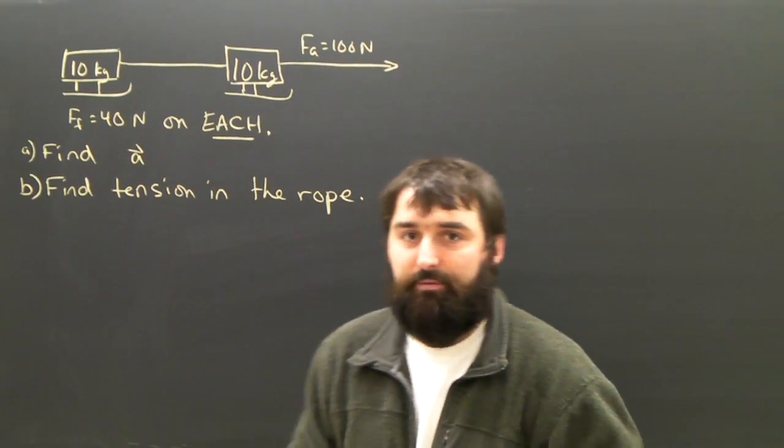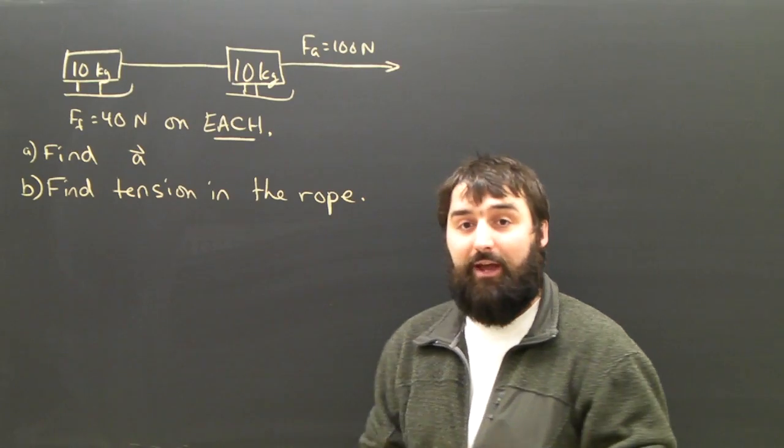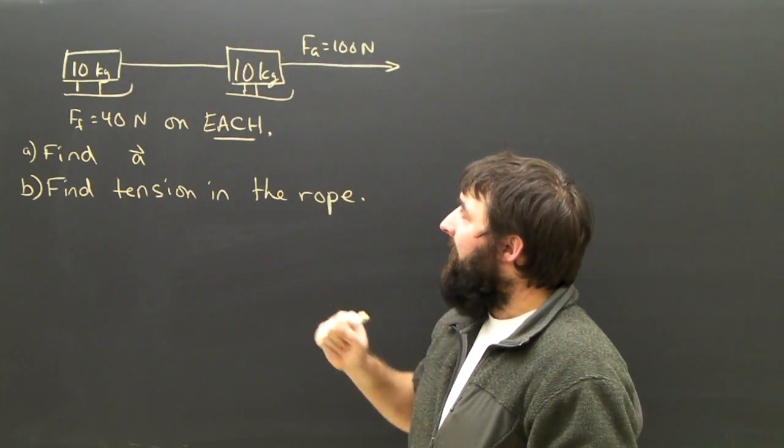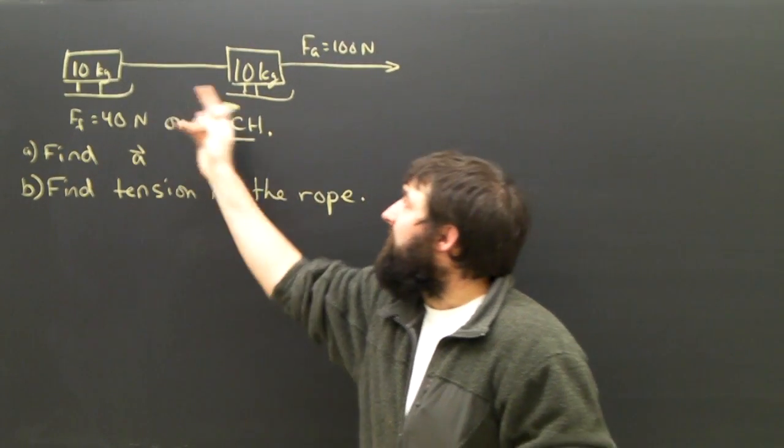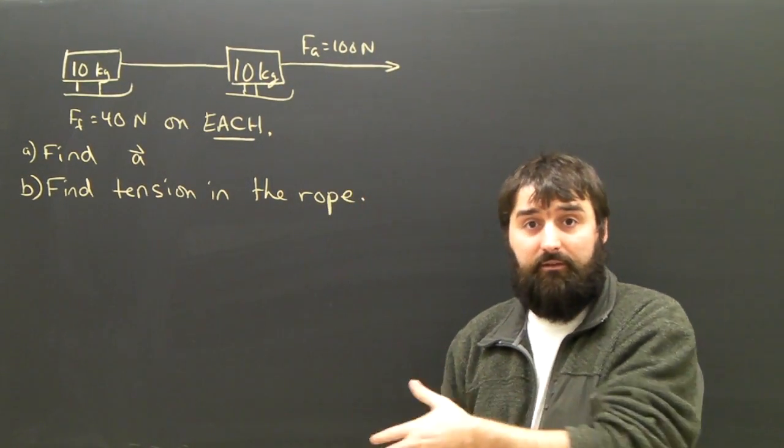So here we have another dynamics problem which is going to illustrate part of Newton's third law, the action-reaction law. What we have are two sleds, two toboggans, which are attached by a rope and then being pulled by an applied force of 100 newtons applied to the front sled.